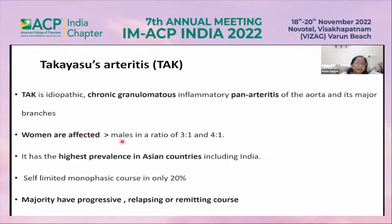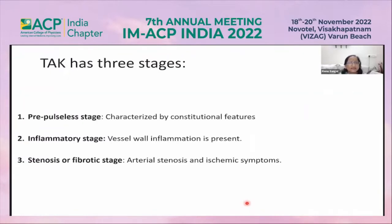Women outnumber males in a ratio of 3–4:1. It has the highest prevalence in Asian countries, including India. It has a self-limited monophasic course in only 20% of patients; in the rest, the course is progressive, relapsing, or remitting. Takayasu arteritis has three stages: pre-pulseless disease characterized by constitutional features similar to those in giant cell arteritis.